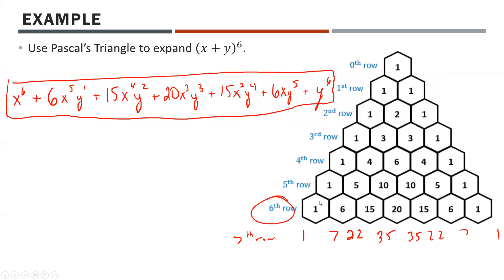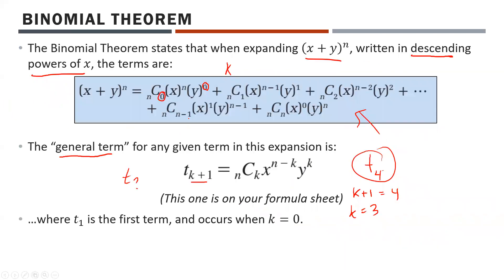Looking back at our earlier expansion, the fourth term has an exponent of 3 on y, and in the formula the exponent on y is always k — so on the fourth term, k equals 3. Term 1 occurs where k equals 0, because the first power of y is y to the power of 0. That's why we start there.